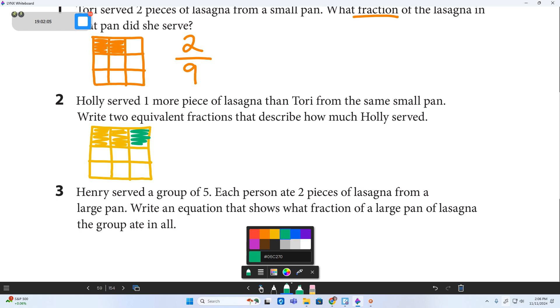It says write two equivalent fractions that describe how much Holly served. Start with the easiest fraction. I see three pieces shaded. Three out of nine. Now, an equivalent fraction, there are literally an infinite number of possibilities. And we're going to talk about this so much in the next month and a half, how to find an equivalent fraction. Now, I think because we haven't talked too much about it yet, I'm going to show you something. If you imagine this as one long strip, and this as one long strip, and this as one long strip, can you tell that one out of the three long strips is shaded?